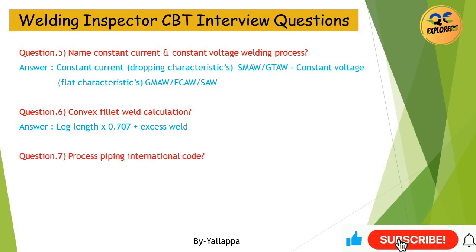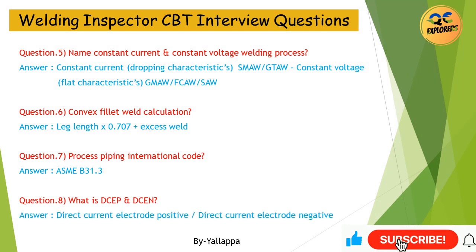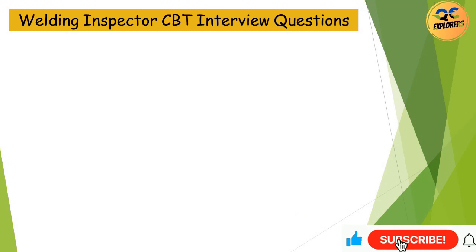Question 7: What is the Process Piping International Code? Answer: ASME B31.3. Question 8: What are DCEP and DCEN? Answer: DCEP is Direct Current Electrode Positive; DCEN is Direct Current Electrode Negative.